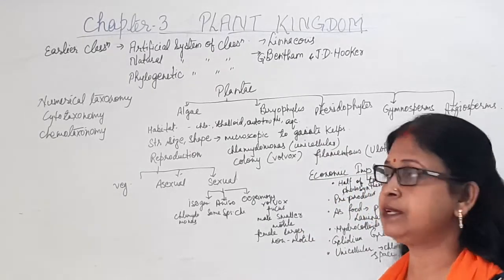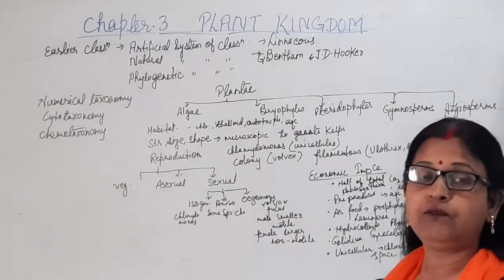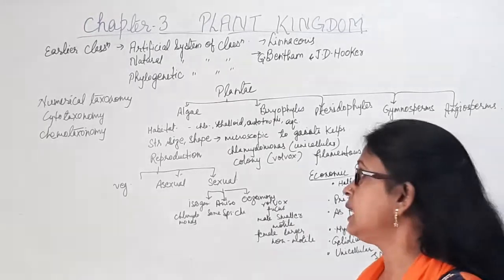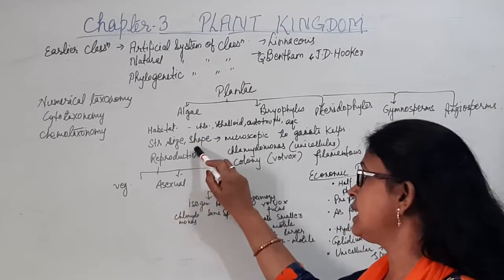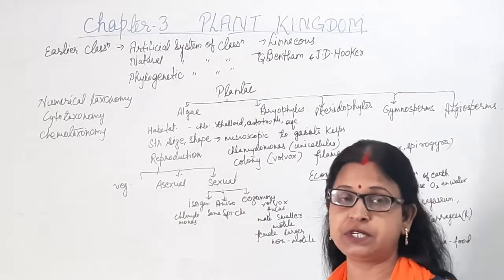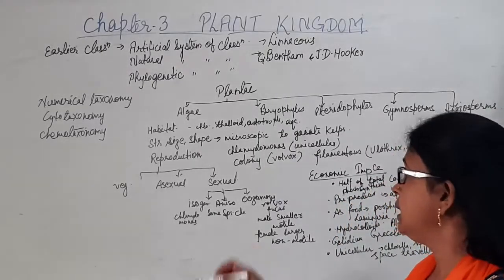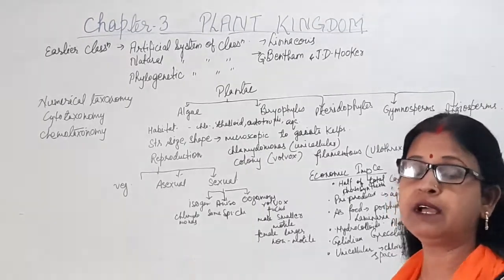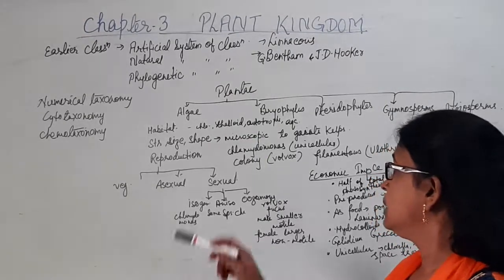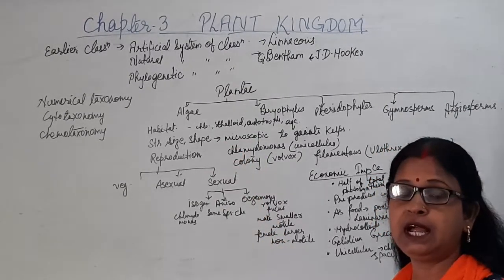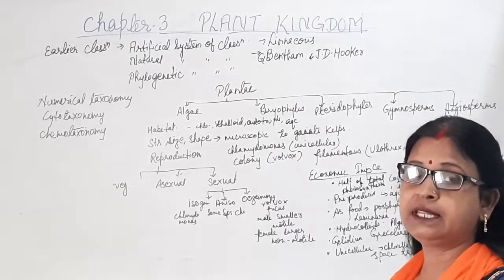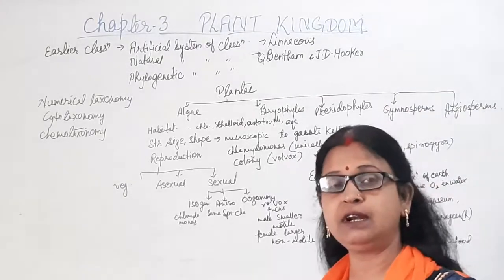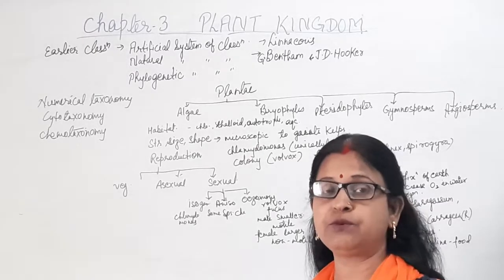Now we will start with algae in detail. For studying any group of plants, we consider main points: habitat, structure, size, shape, mode of nutrition, and reproduction. Algae have chlorophyll and are therefore autotrophs — they capture sunlight and perform photosynthesis. They are thalloid, meaning they have no root, stem, or leaves; such a body is called a thallus. Most algae are aquatic, found in both fresh water and marine water, and can also be present in moist places.